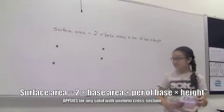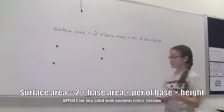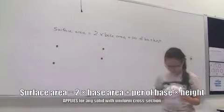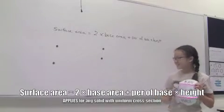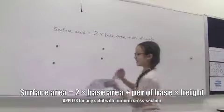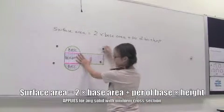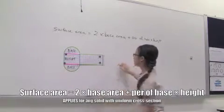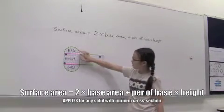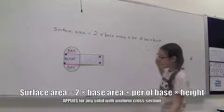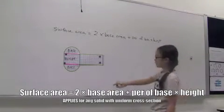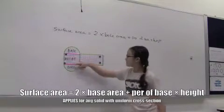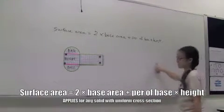For example, look at this solid with a semicircular cross-section. This is the base. Two times the base area gives us the two bases of the solid.